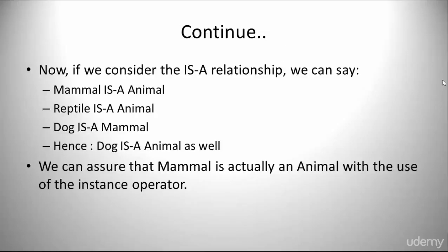Now, if we consider the is-a relationship, we can say Mammal is an Animal, Reptile is an Animal, Dog is a Mammal. Hence, Dog is an Animal as well. We can assure that Mammal is actually an Animal with the use of the instanceof operator.